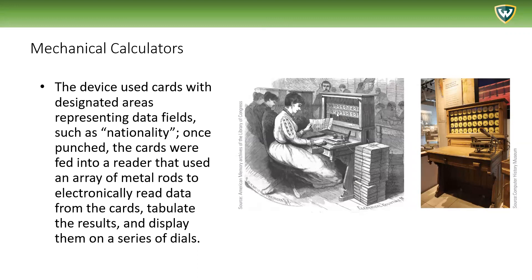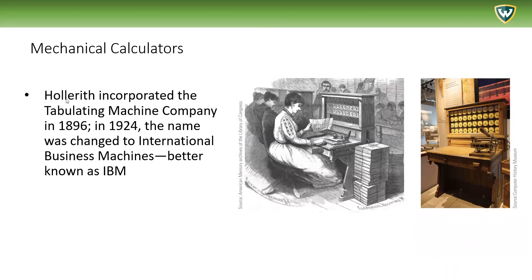The dials would show how many people are from one place — how many from Kentucky, how many from Missouri, and so on. Hollerith incorporated the Tabulating Machine Company in 1896. In 1924, the name was changed to International Business Machines, better known now as IBM. So they've been around for a while.